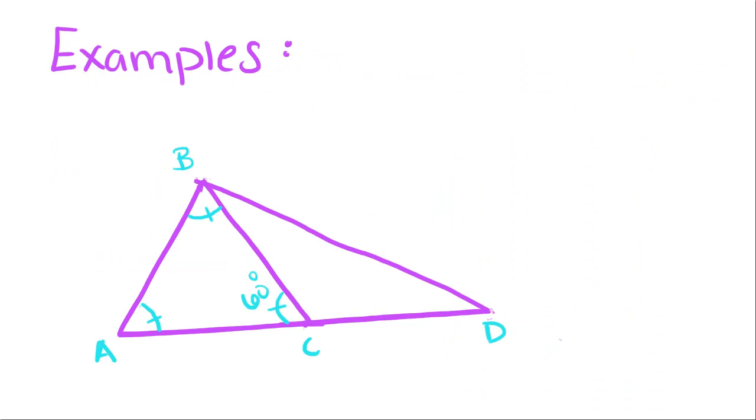Okay, so now we're going to do an example. We have triangle ABC and triangle BCD, and because the triangles are already marked, we know that these three angles are congruent.